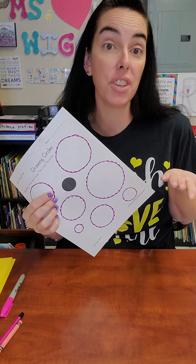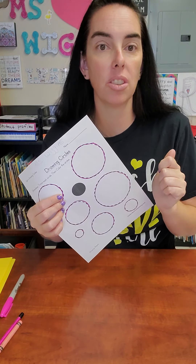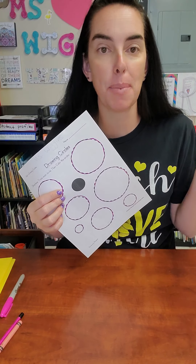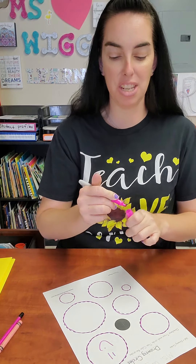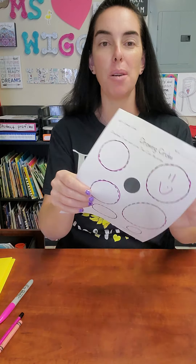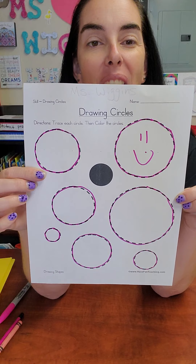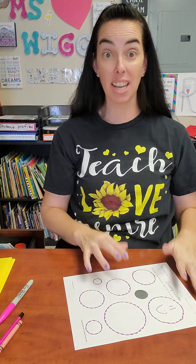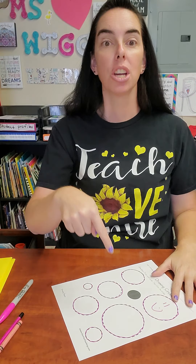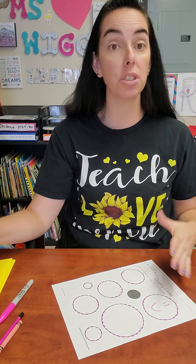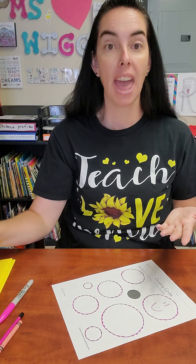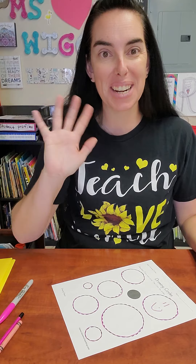Go ahead and trace your last circle, and we're all done. If you would like to, you can color these circles in, or you can even turn them into some happy faces — I'm so happy that you guys are doing an amazing job on your work. We are all done — that was super simple! Go ahead and take this paper and put it into your communication folder because you are turning this in to me. You guys have a great day, we'll see you later. Bye!